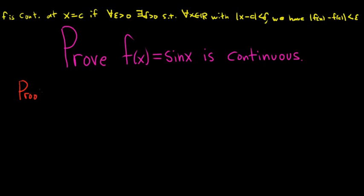So proof. It doesn't take some huge intuition to find the delta as it typically does in these problems. So we'll start by letting epsilon be greater than 0. And we're going to choose our delta to just be epsilon, believe it or not. It's that simple.